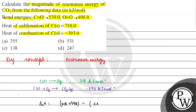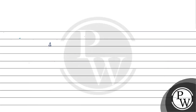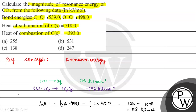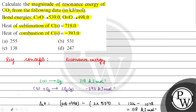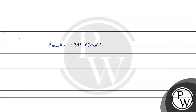Using bond energies, the standard enthalpy of reaction comes out to be 138 kJ/mol. But this reaction is a combustion reaction, and the actual enthalpy of combustion given is -393 kJ/mol. We have calculated the standard enthalpy of reaction as 138 kJ/mol, and the difference is due to an extra stabilization factor — resonance energy.